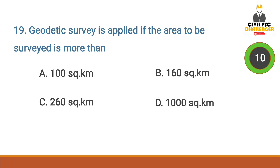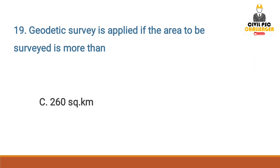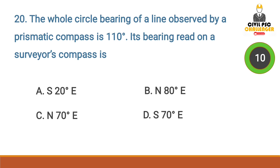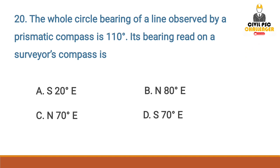Geodetic survey is applied if the area to be surveyed is more than — Answer option C: 260 square kilometers. The whole circle bearing of a line observed by a prismatic compass is 110 degrees. Its bearing read on a surveyor's compass is — Answer option D: South 70 degrees East.